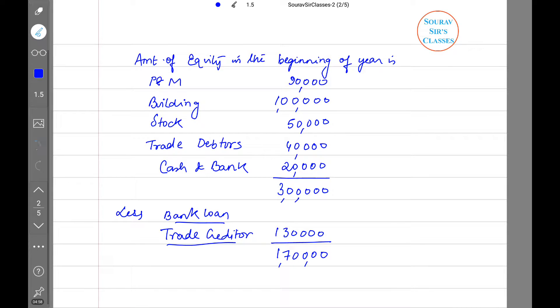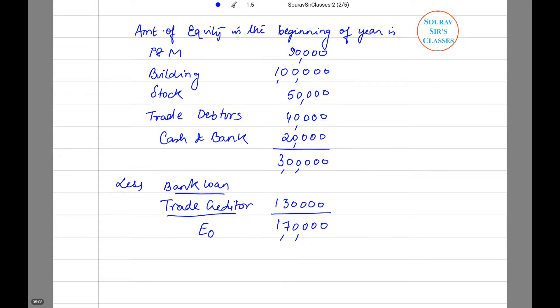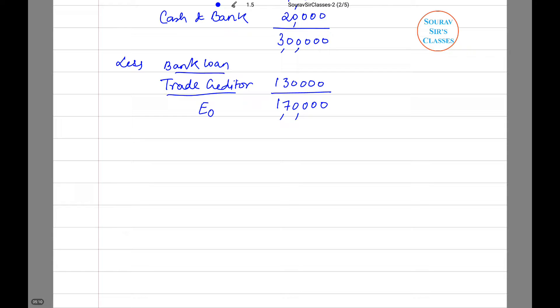So it is 1 lakh 70,000 and say this is E0, that is equity in the beginning of the year. Now we will calculate at the end of the year.